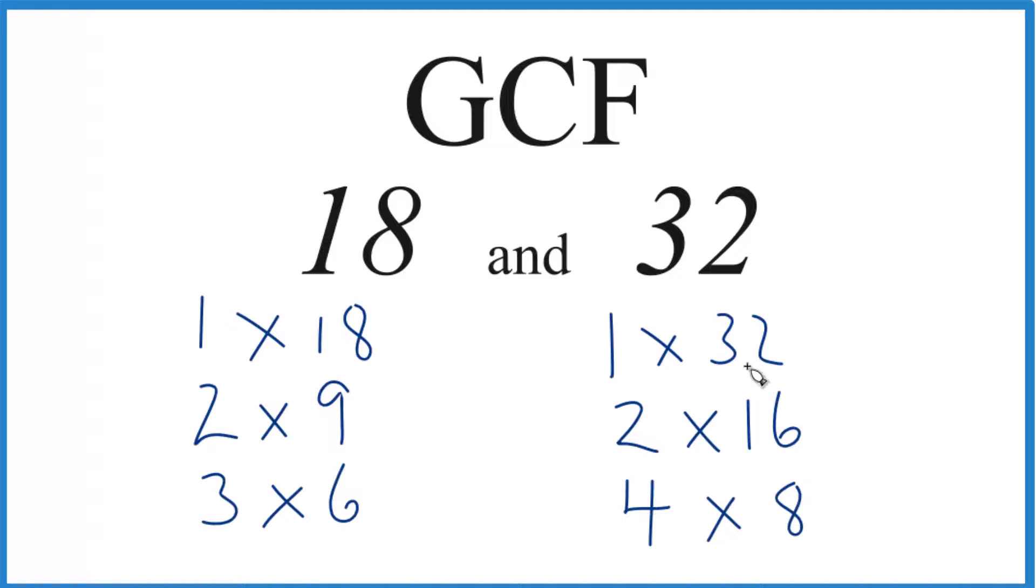So these are the factors for 18 and then 32. In common, we have 1, 1 goes into both numbers evenly, 2, 2 goes into 18, 2 goes into 32, but that's it. So 2 is the greatest common factor between 18 and 32.